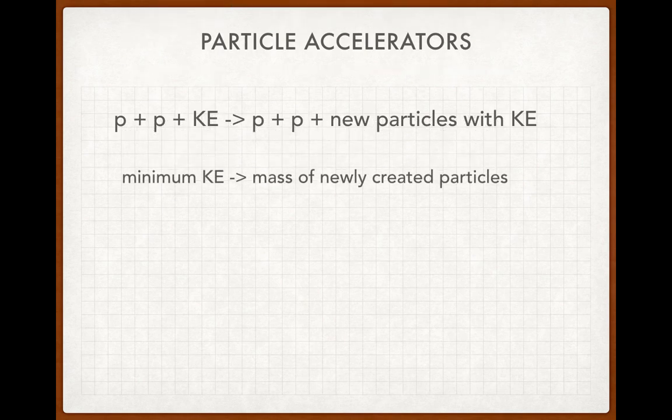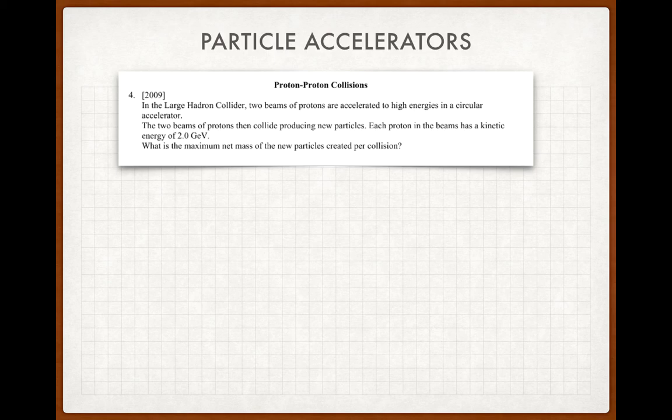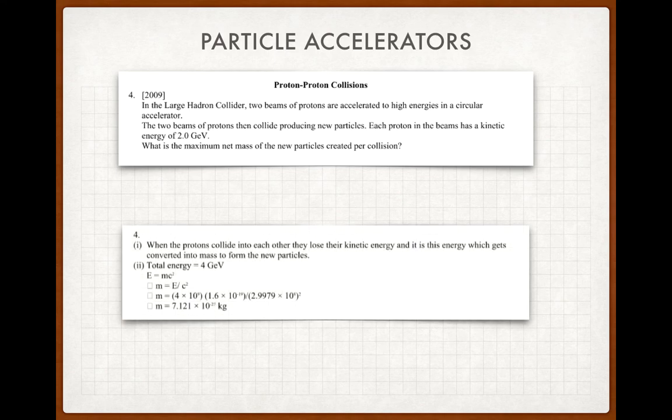So, minimum kinetic energy. First question, came up in 2009. We have two beams of protons accelerated to high energies in a circular accelerator, they collide producing new particles. Each beam has a kinetic energy of two gigaelectron volts. What's the maximum net mass of the new particles created per collision? So if each beam has two gigaelectron volts, there's four gig available, convert that to joules first of all, and then that energy is converted to mass, so you'll use E equals mc squared with four gigaelectron volts in joules.